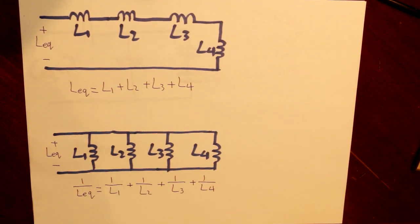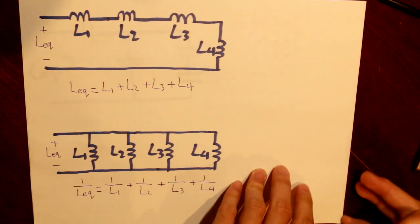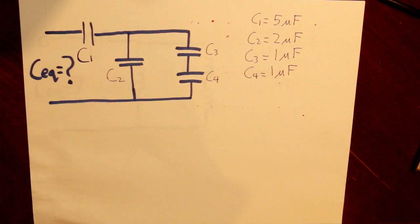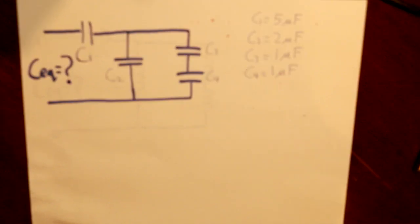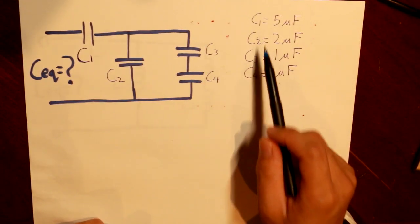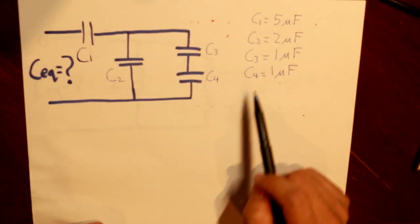Now that we understand the formulas to calculate equivalent capacitance and inductance in series and parallel, let's do a numerical question. Here we have a problem to find the equivalent capacitance given the values of C1, C2, C3, and C4.